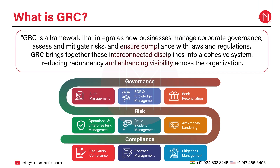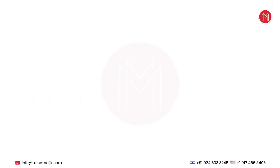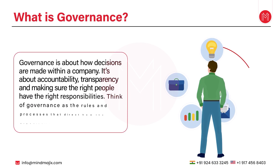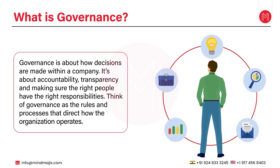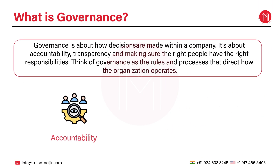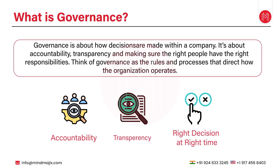Before we deep dive, let's break down what each of these components really means. Starting with governance: governance is about how decisions are made within a company. It's about accountability, transparency, and making sure the right people have the right responsibilities. Think of governance as the rules and processes that direct how the organization operates.